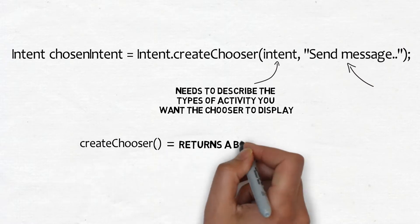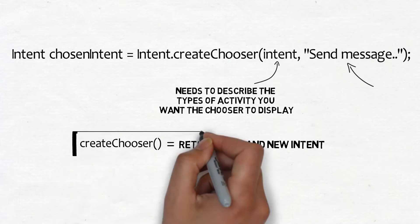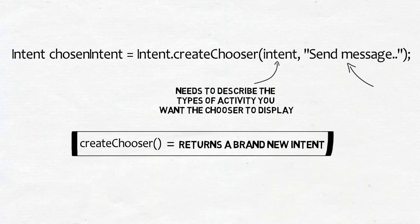The createChooser method returns a brand new intent. This is a new explicit intent that's targeted at the activity chosen by the user. It includes any extra information supplied by the original intent including any text.